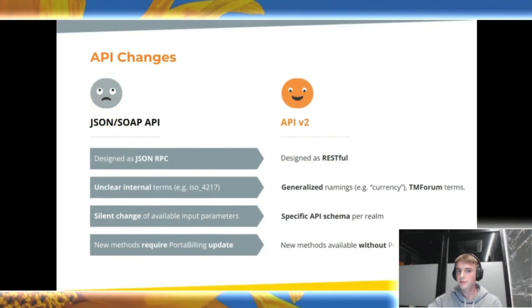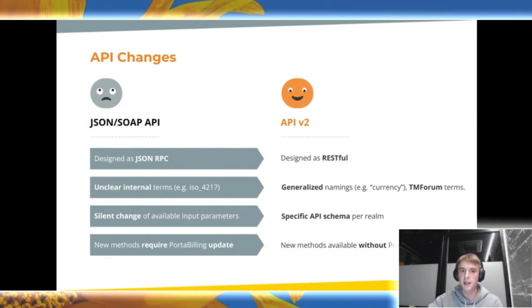Back to the changes. Instead of using proprietary JSON-RPC implementation, we return to the RESTful design with predictable URIs, response status codes, and input arguments. We will change and clarify internal Portabilon terms to ones that can be either understood by everyone or use standard terminology. For example, the ISO 4217 field is changed to 'currency' because it's currency. Instead of silently changing the list of available input parameters for the API user, we will provide multiple API schemas that exactly correspond to input parameters accepted by the current realm. No more guessing why some parameter was ignored by the server.